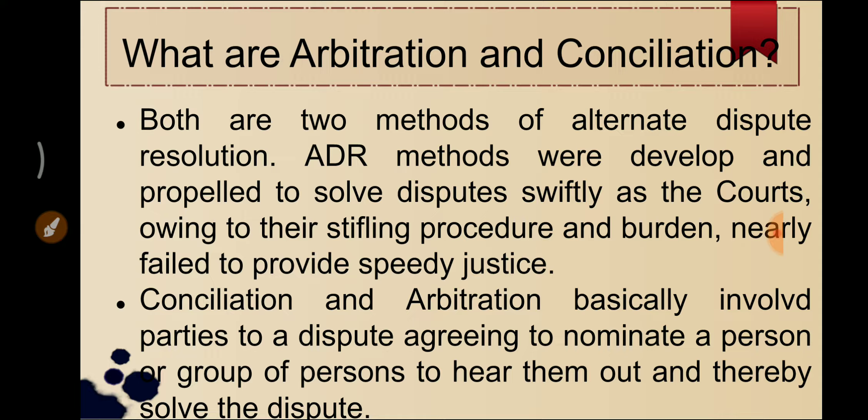So the alternate that emerged is alternate dispute resolution methods. There are quite a few, but this act deals only with arbitration and conciliation. Conciliation and arbitration basically involve parties to a dispute agreeing to nominate a person or a group of persons to hear them out and thereby solve the dispute. The two parties form a contractual agreement in which they agree to nominate someone who would hear both sides and dole out an award in favor of either or with some compromise included.